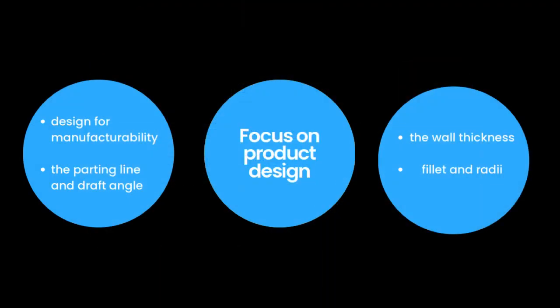To guarantee a successful casting process, many elements must be considered when designing products for sand casting. First, design for manufacturability ensures the design can be simply cast in a mold without being overly complex. The parting line and draft angle make casting removal and mold separation easier, helping prevent flaws like undercuts. Wall thickness should be kept constant throughout the design to ensure good solidification and prevent warping or shrinkage, while avoiding abrupt changes in thickness and sharp corners. Finally, incorporating fillets and radii at strategic locations improves molten metal flow, reduces stress concentrations, and increases the casting's overall strength and quality.